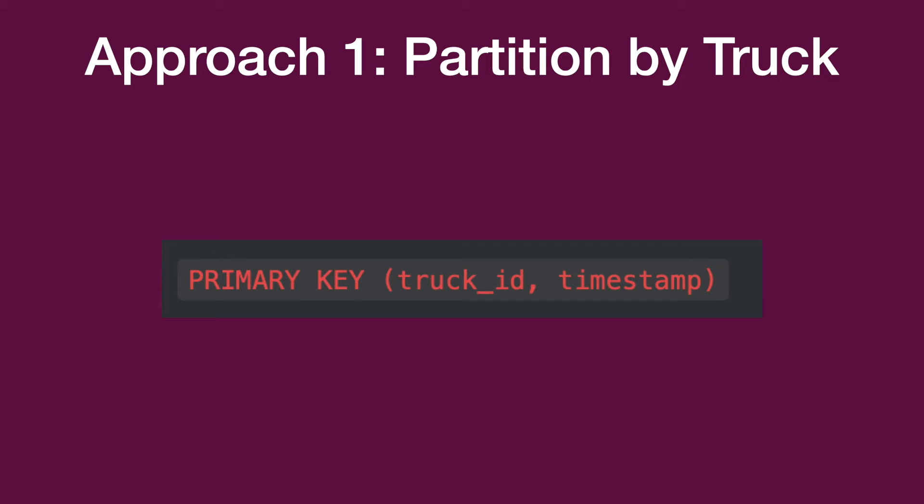When it comes to defining the primary key — as I covered in the previous video — the first field in a primary key is your partition key. Unless you specify a compound partition key, truck ID is going to be your partition key in this design.